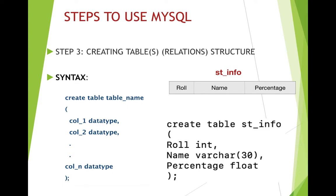One important thing: for the last column we should not give a comma after the data type. Think of it like a list — pen, pencil, and CD. After 'pen' we give a comma, after 'pencil' we give a comma, but after 'CD' we do not give a comma because it is the last item. Similarly, for the last column after giving the data type, you should not give a comma. After that we close the bracket and end the entire table creation with a semicolon.